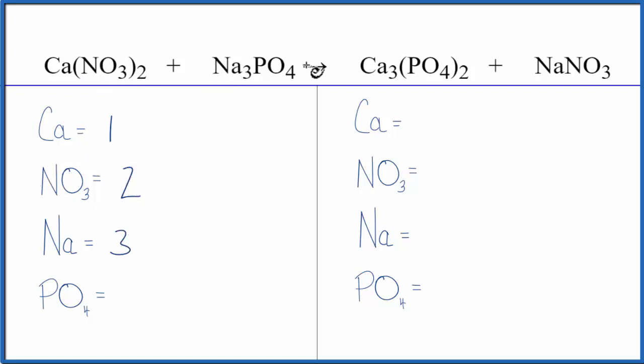Sodium, we have three of those, and again, phosphate and phosphate. So we have one of the PO4s. So you see this is a lot neater than counting up all the individual atoms.